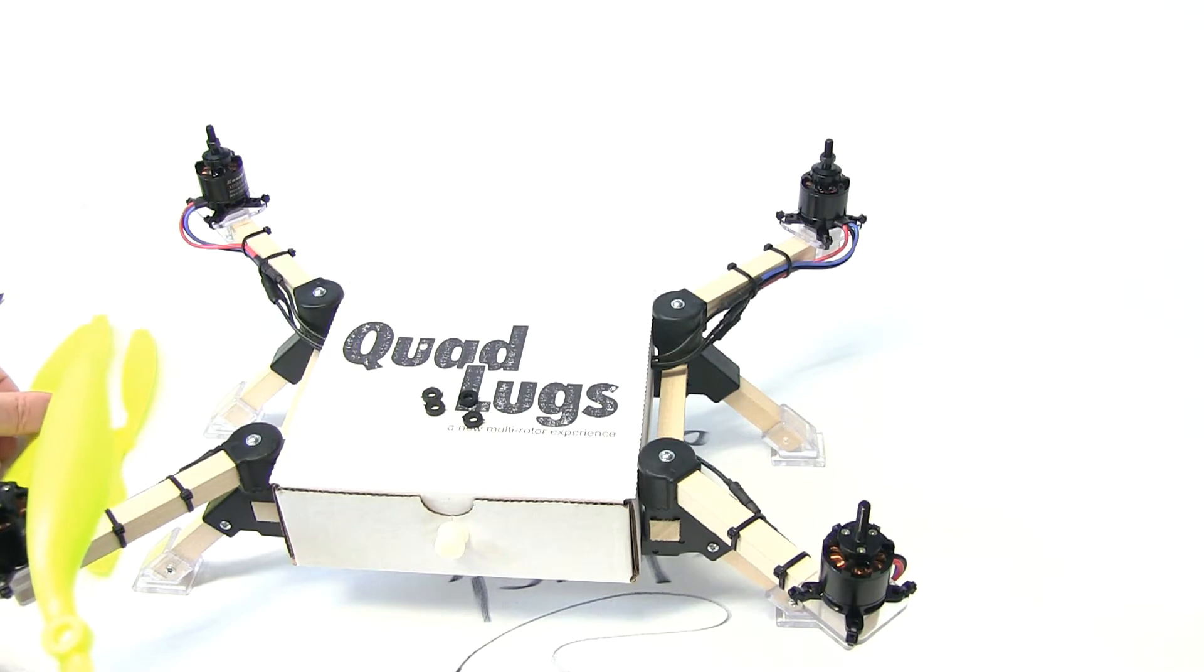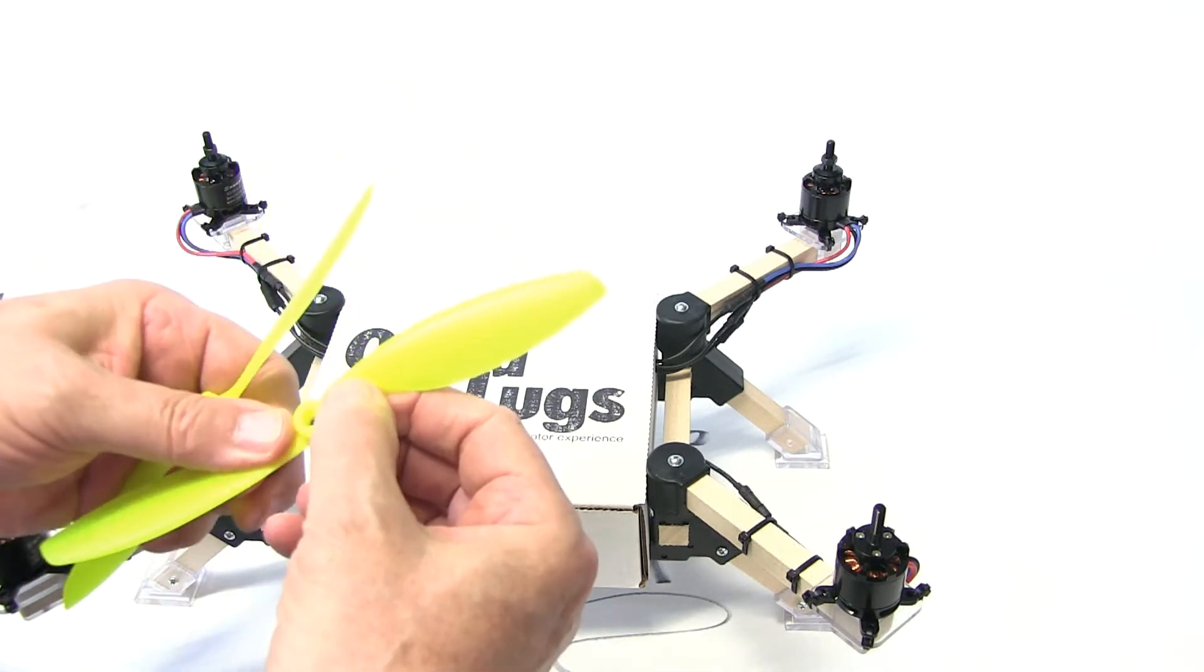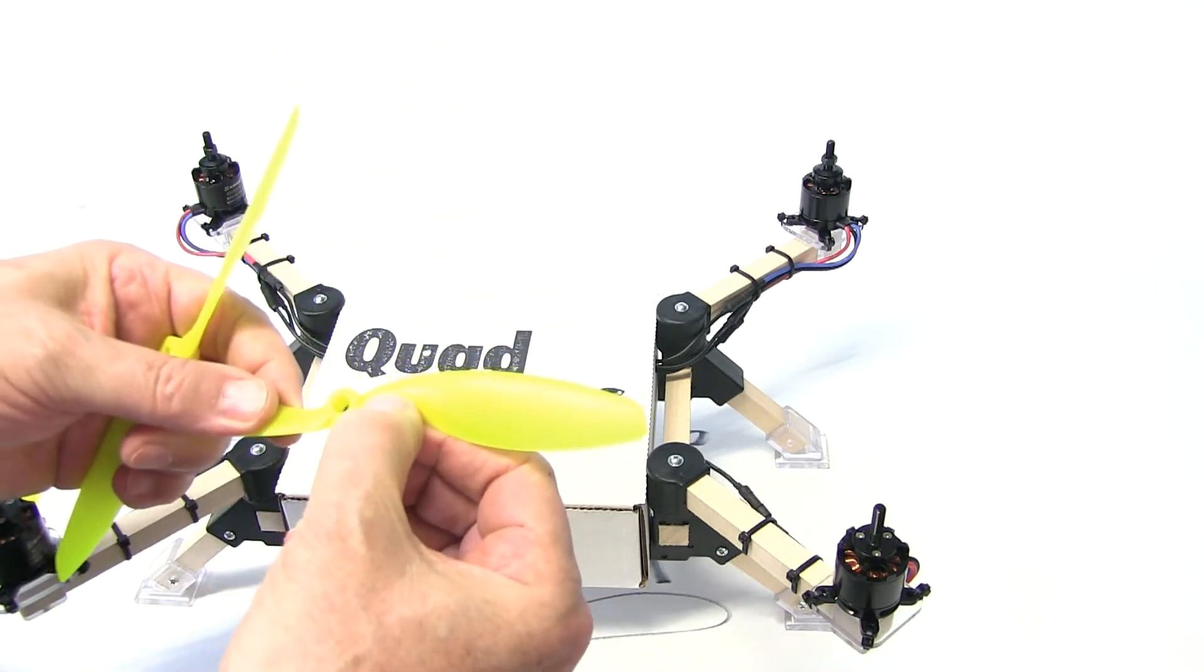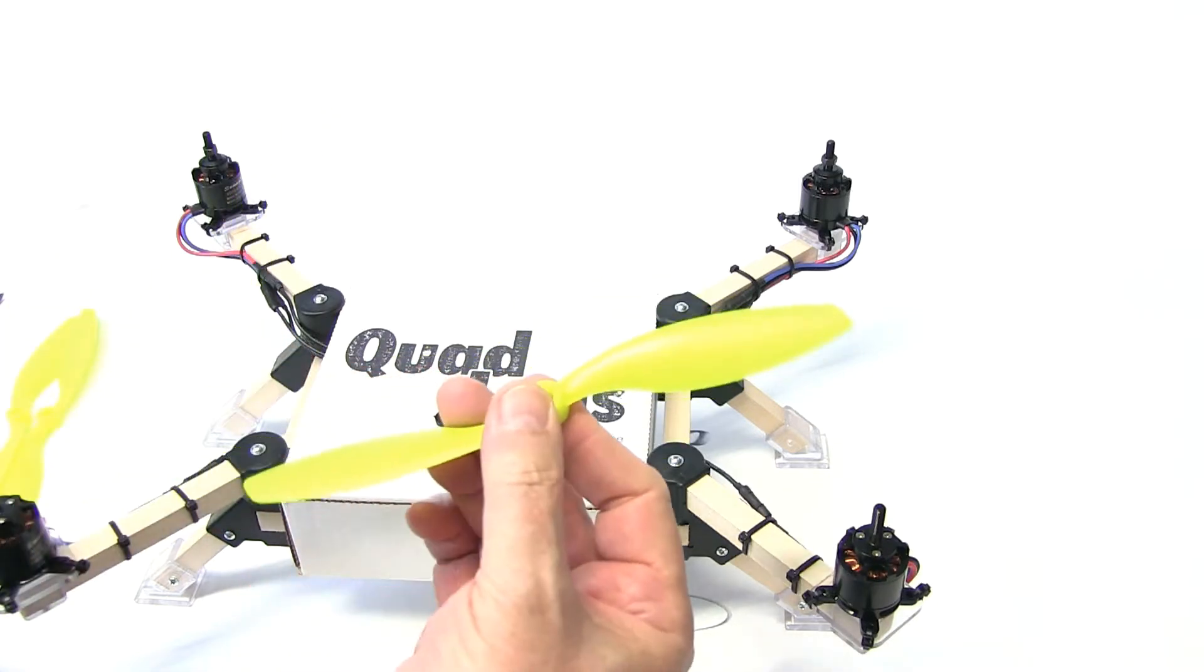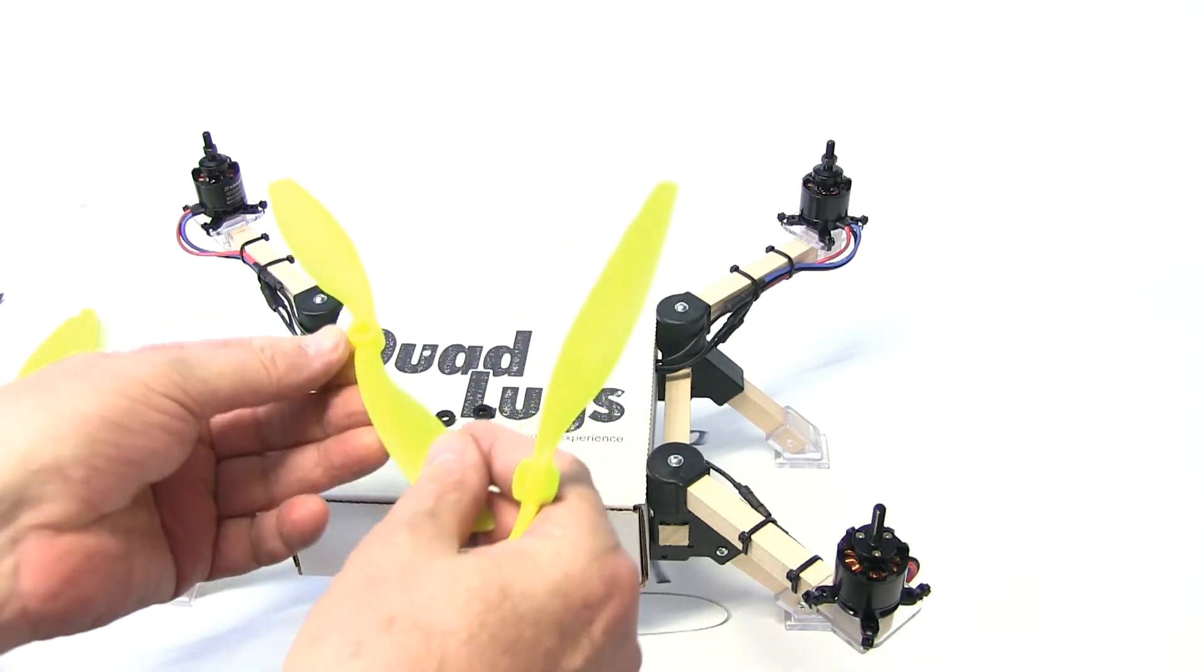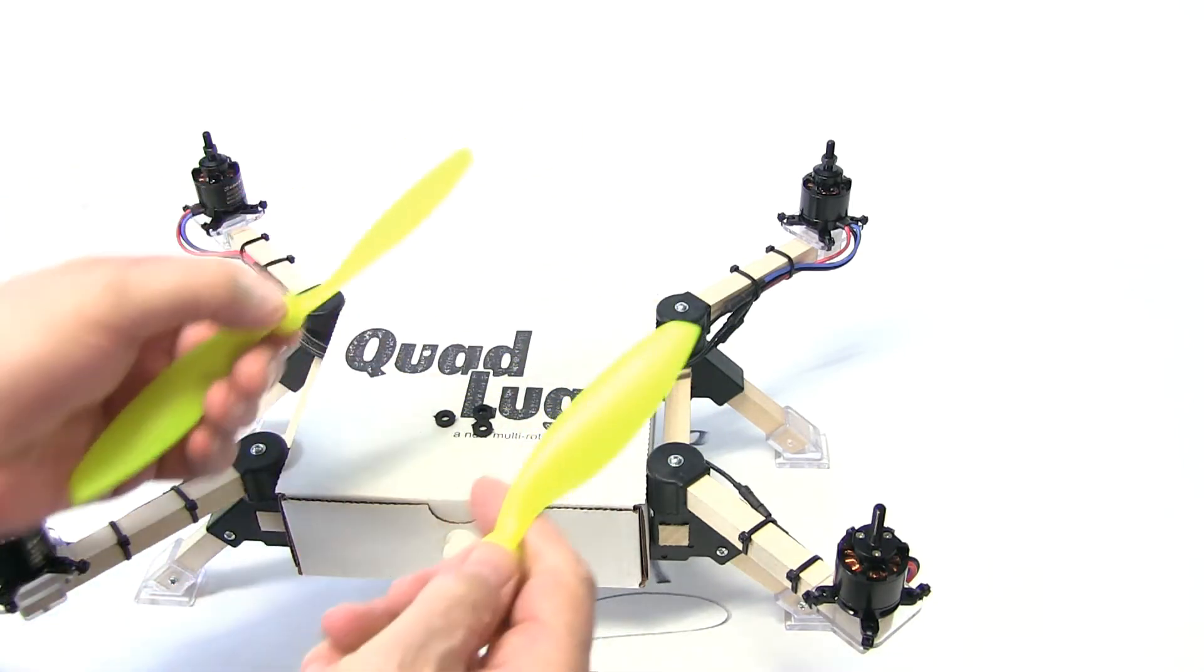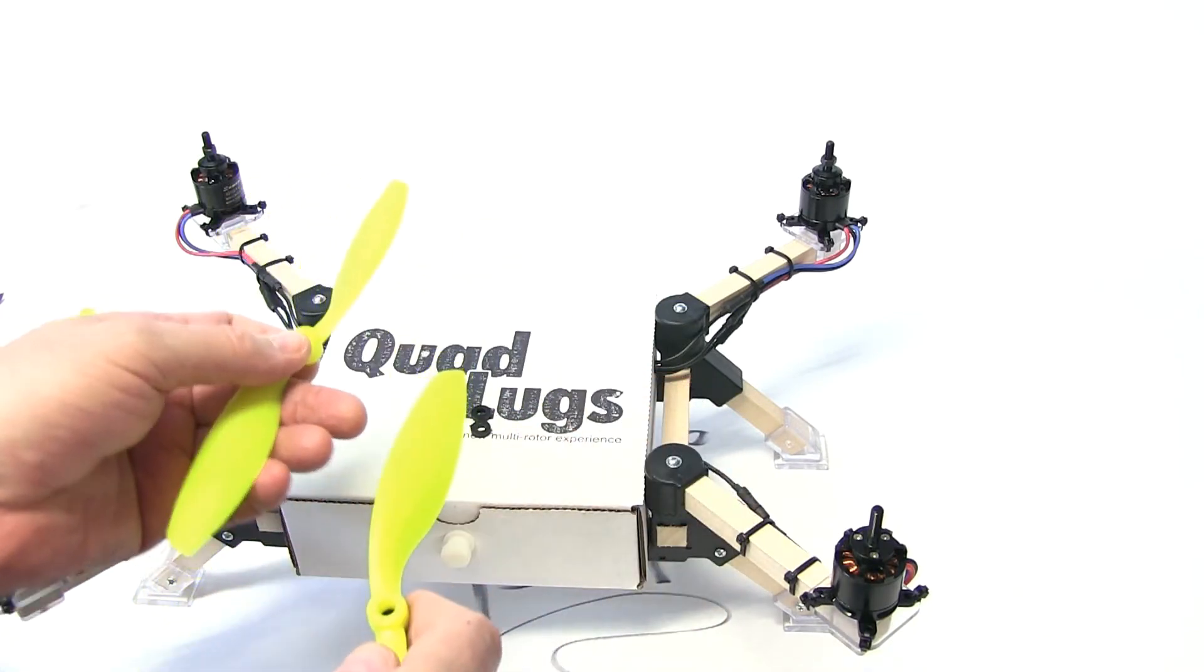These props are directional - they're clockwise and counterclockwise. With the kit you're getting two clockwise and two counterclockwise. If you notice on the props, you look at the writing and it says 8 by 4.5 L left, 8 by 4.5 R. So R clockwise, L counterclockwise - it stands for right and left.